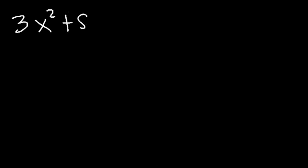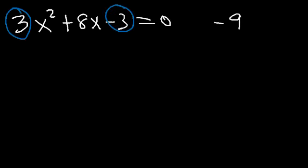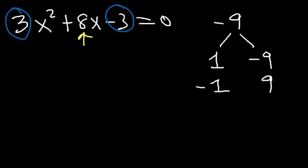Now what about 3x squared plus 8x minus 3? Go ahead and factor the expression and solve for x. First, multiply 3 times negative 3 to get negative 9. We need two numbers that multiply to negative 9 but add to 8. Since negative 9 and 8 differ by 1, we need 1 as one of our numbers. So 1 and negative 9 add to negative 8, but negative 1 and 9 add to positive 8 — so those are the numbers.